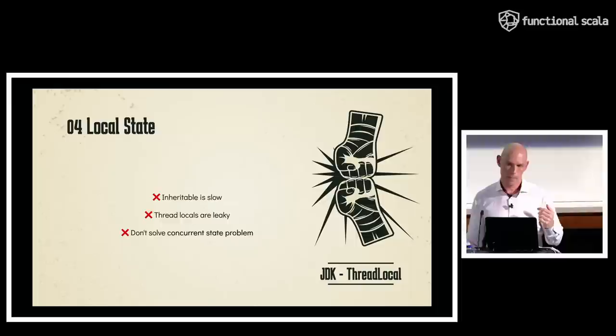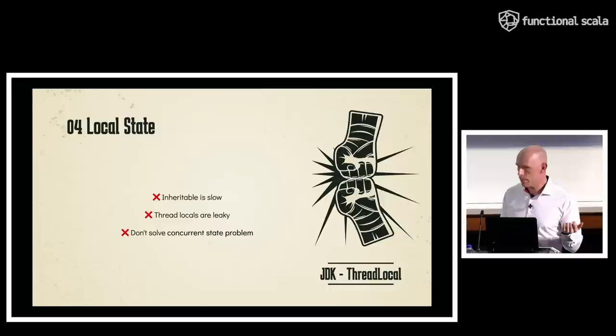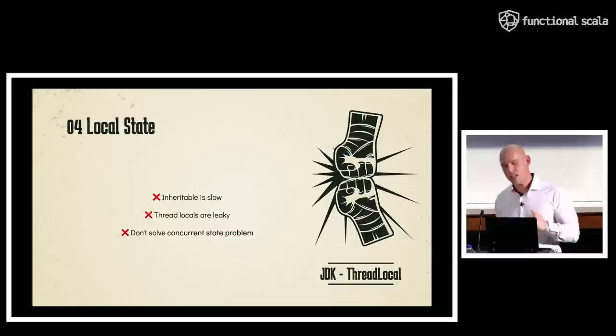Also, thread locals are super leaky. Once you set a thread local, it stays set forever — thread locals are not scoped. If you're creating more and more thread locals, you'll eventually exhaust heap memory. And fundamentally, it doesn't solve what I call the concurrent local state problem.